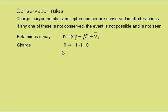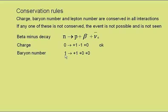Well, the charge: the neutron has a charge of zero, the proton a charge of plus one, the beta-minus a charge of minus one, and the electron anti-neutrino zero charge. And nought does equal plus one, minus one, plus nought. So that is OK. Baryon number: the neutron has a baryon number of one, the proton a baryon number of one. The beta-minus and the electron anti-neutrino both have zero baryon number, and so that is OK.